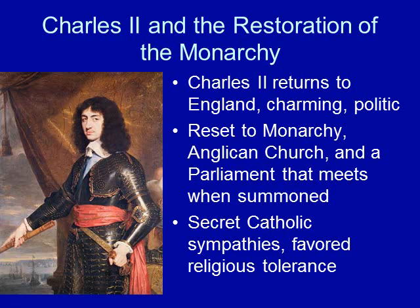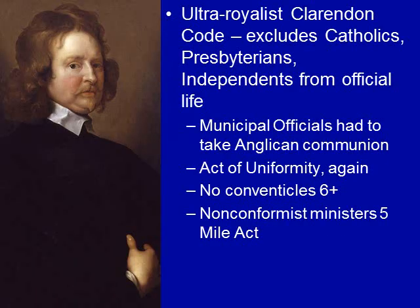Charles II has secret Catholic sympathies and favored religious toleration, which will make people suspicious. He couldn't do anything about the ultra-royalist Clarendon Code — somewhat ironic, since these folks support the monarchy. The Clarendon Code excludes Catholics, Presbyterians, and Congregationalists (also known as Independents) from official life. Municipal officials had to take Anglican Communion, something Catholics definitely couldn't do.